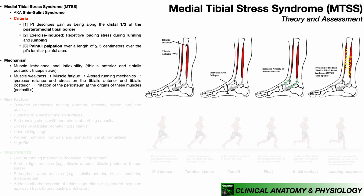If somebody is doing more and more running and they have weakness in muscles like the gastrocnemius and soleus, that muscle will fatigue, causing altered running mechanics — meaning increased reliance on the tibialis anterior and posterior. These muscles originate on the tibia, and more microscopically their point of contact is at the periosteum of the bone. Overuse during running causes irritation of that periosteum, meaning MTSS is really a specific form of periostitis — irritation or inflammation of the periosteum of the tibia.